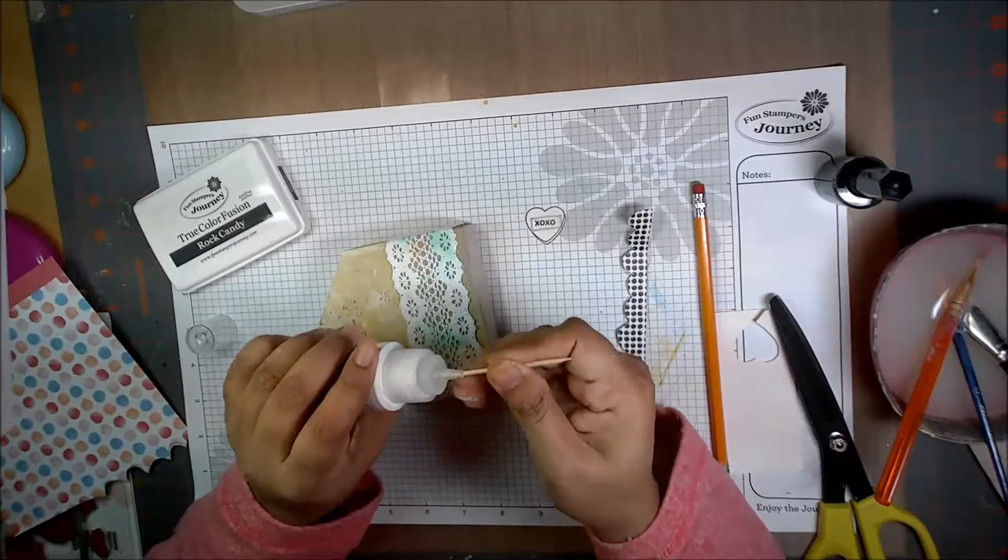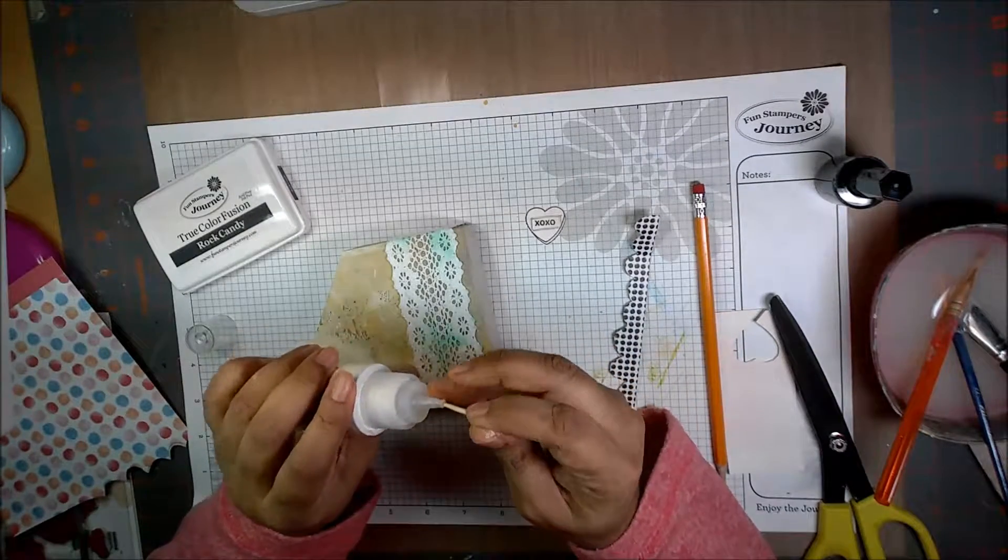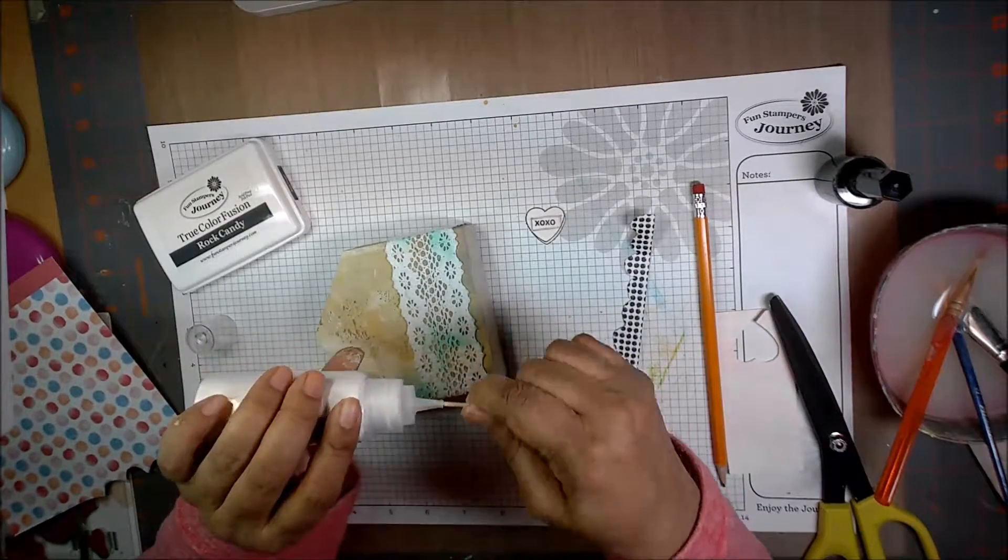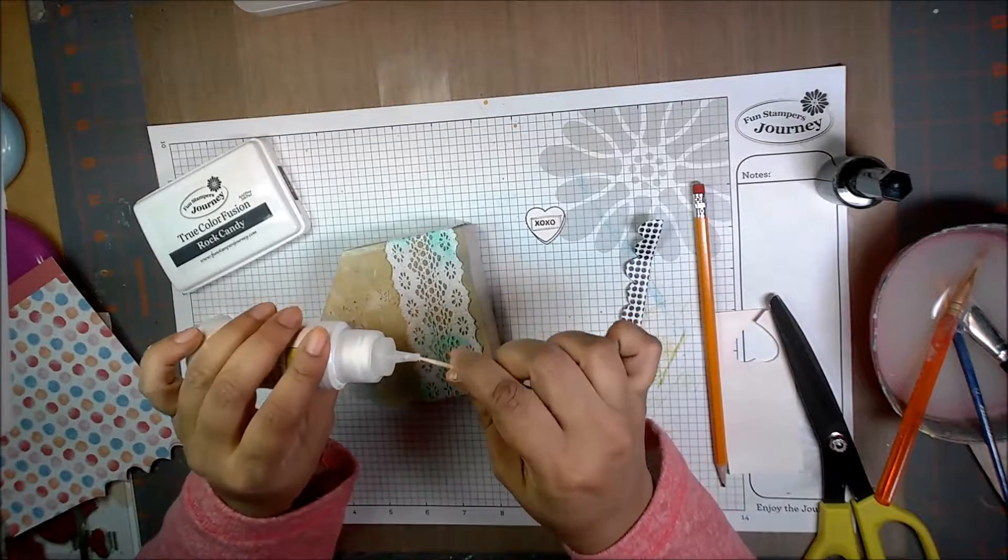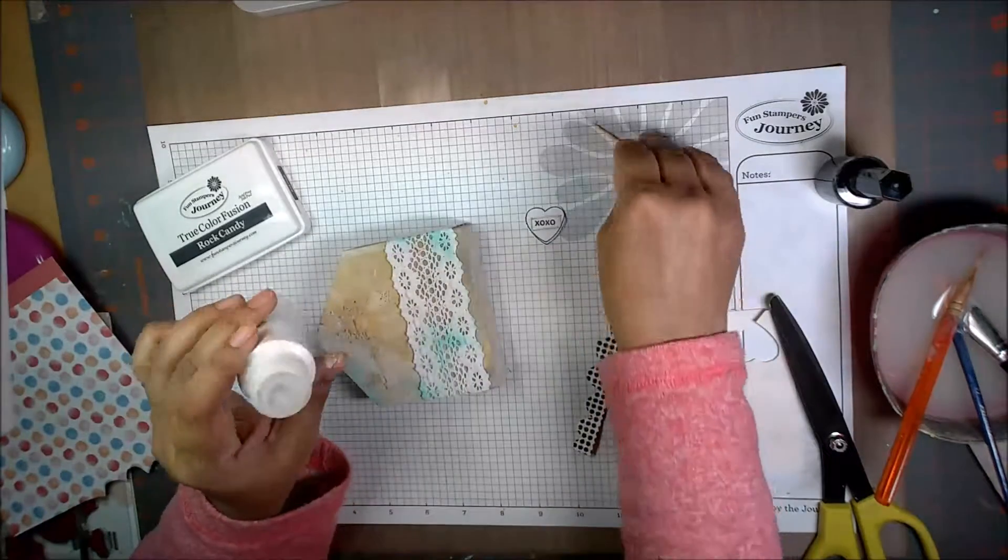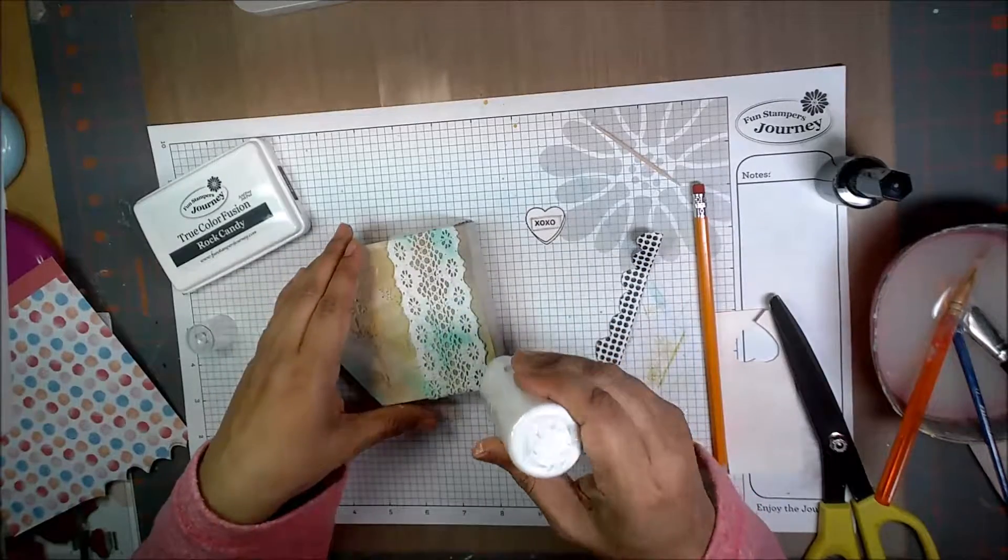So for this again I'm gonna put some glaze. Every time my glaze stops, gets clogged, the tip of the bottle, I just take a toothpick and clear the gunk out and then it's all good again.